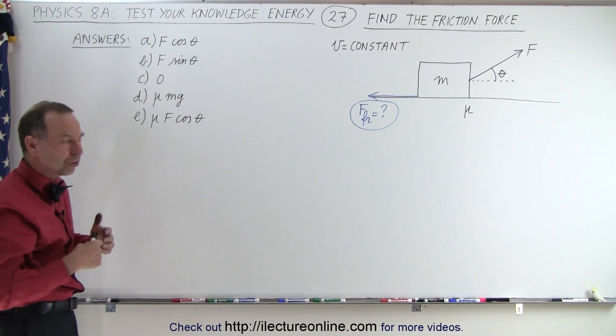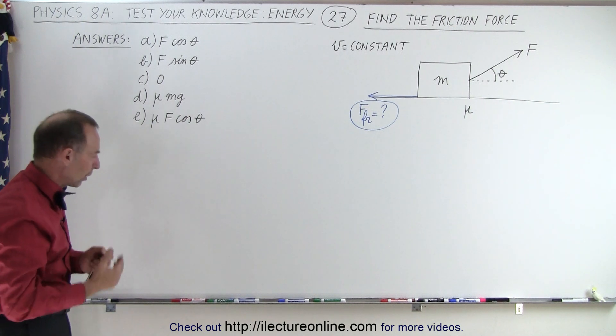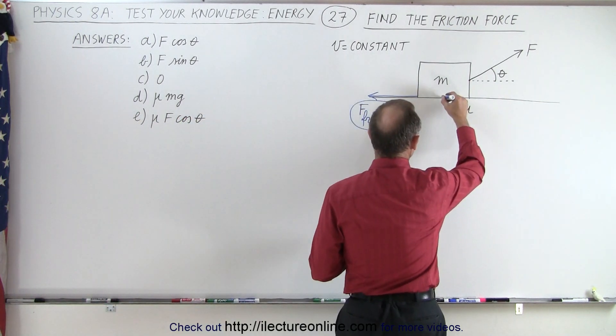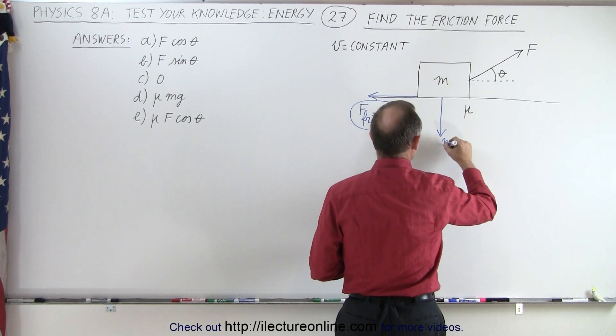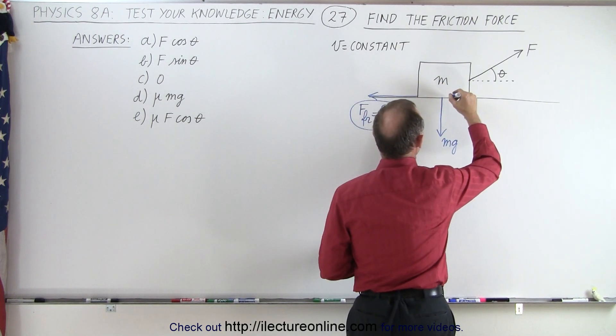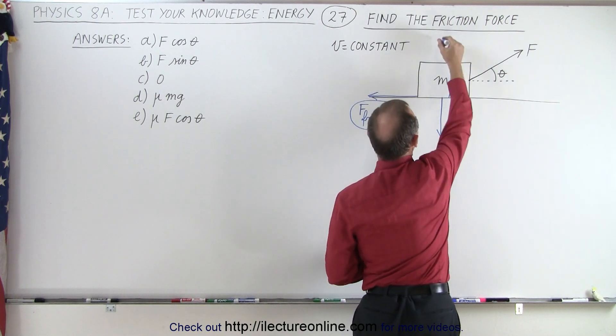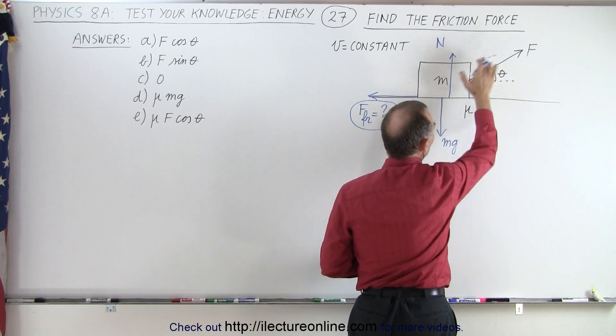So if we're going to solve a problem like this, we probably want to do the following. We want to say well we have the force of gravity pulling down which is mg. We have the force pushing back up, the normal force.